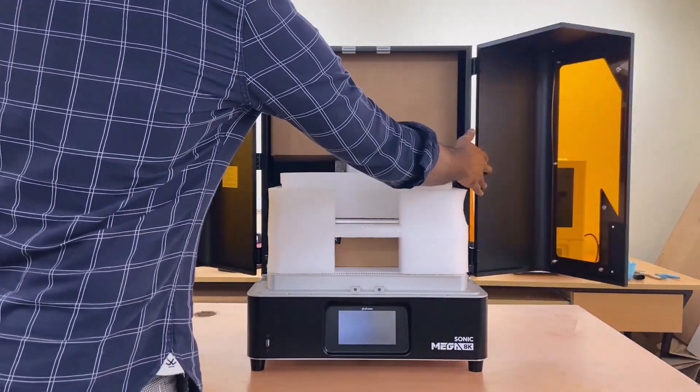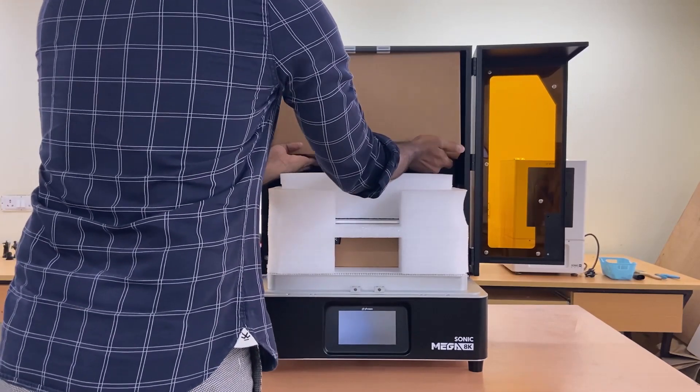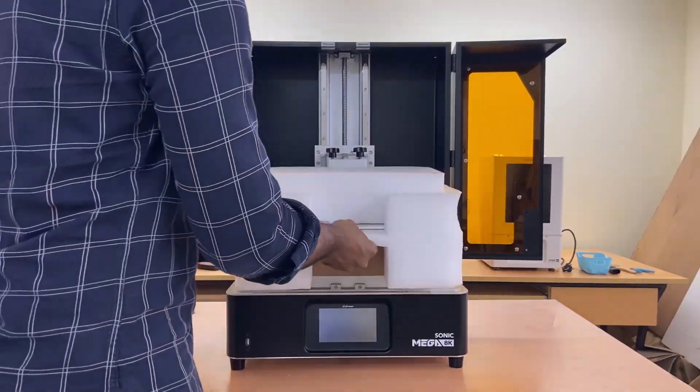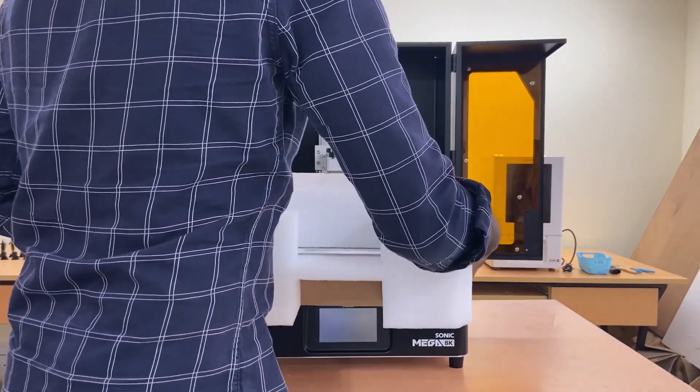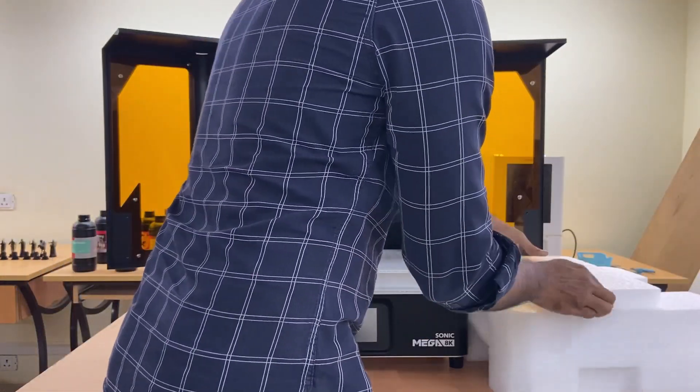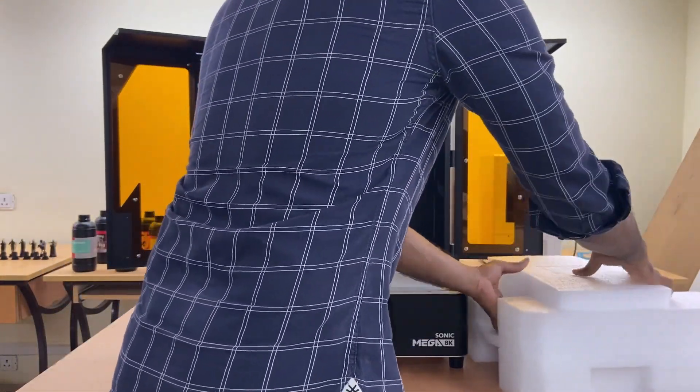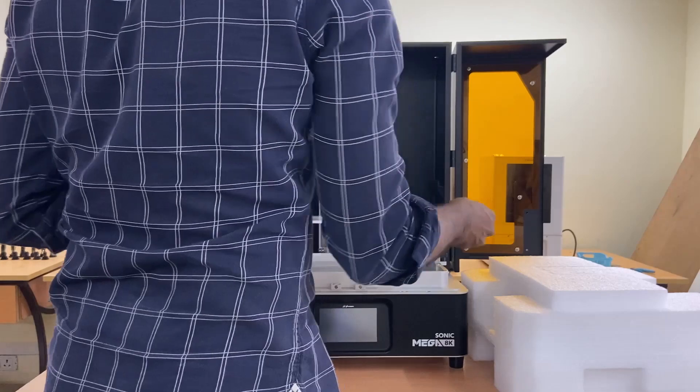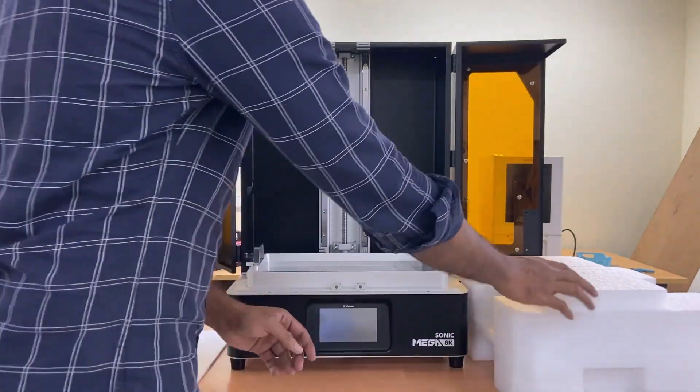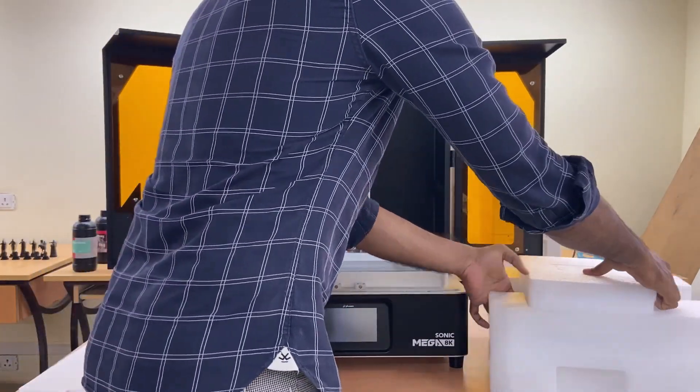Sonic Mega 8K breaks every single limitation for commercial 3D printers. You can now have both size and quality in one print at the same time. From regular table-sized 3D printed miniatures to large 3D printing terrain in stunning 8K resolution.